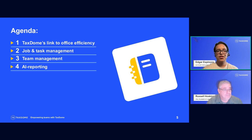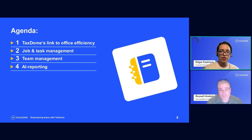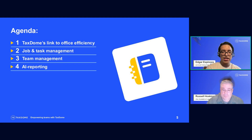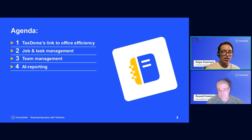Today we're going to cover a couple things. To start, we're just going to have a brief discussion on what is TaxDome's role when it comes to making sure your operation runs smoothly and efficiently. We're going to talk about how we manage jobs and tasks within the platform, team management, access rights, and features your team should or not have access to. Toward the end, we're going to talk about AI reporting — a relatively new feature with a lot of community comments and suggestions. We'll give you an idea of what the feature is and provide sample reports you can start using for your practice.